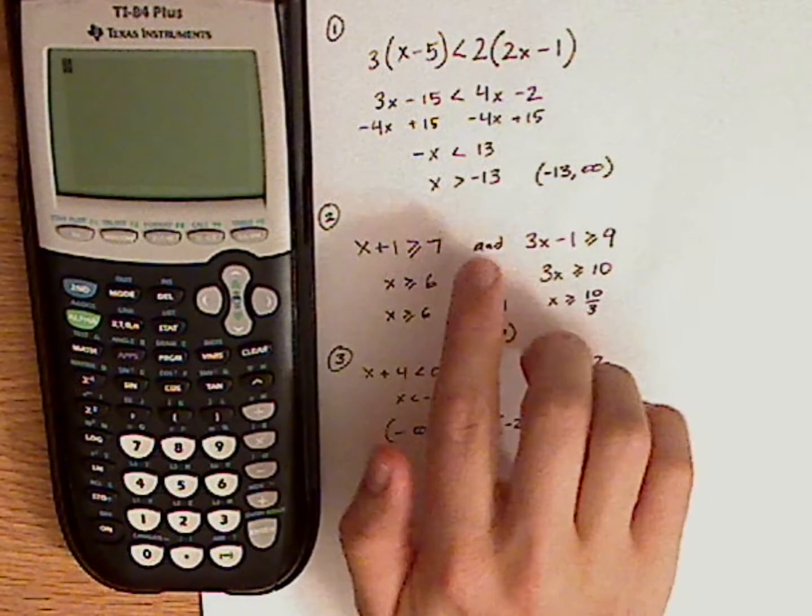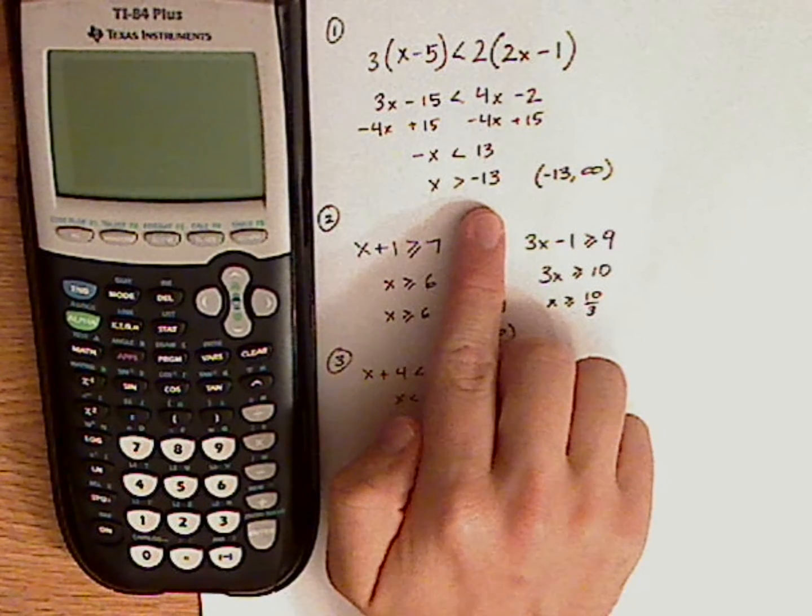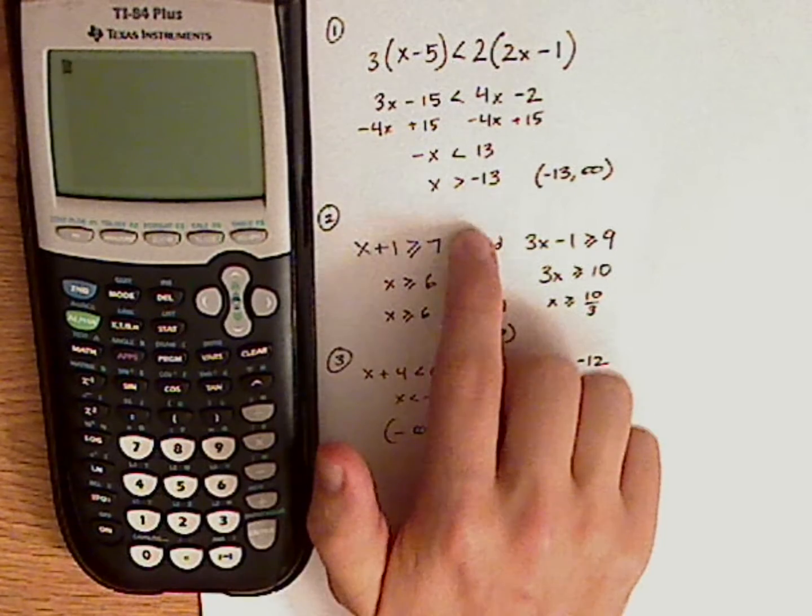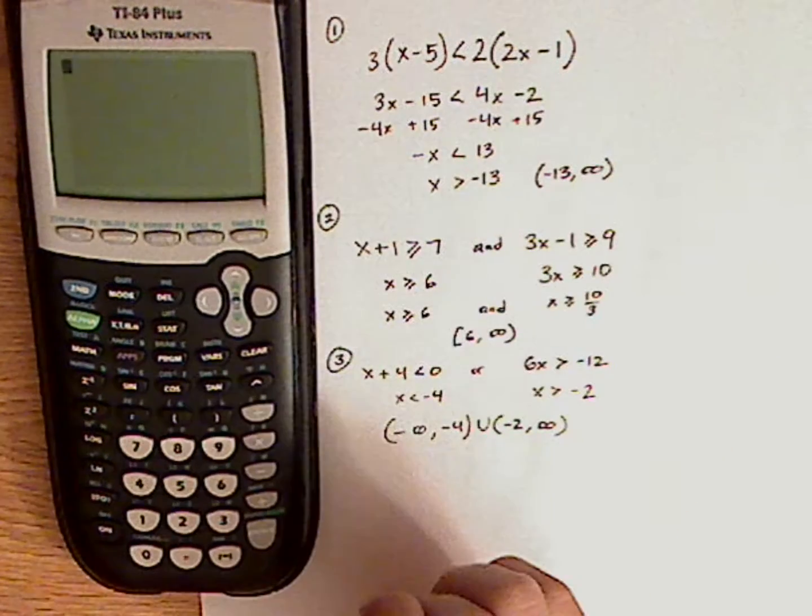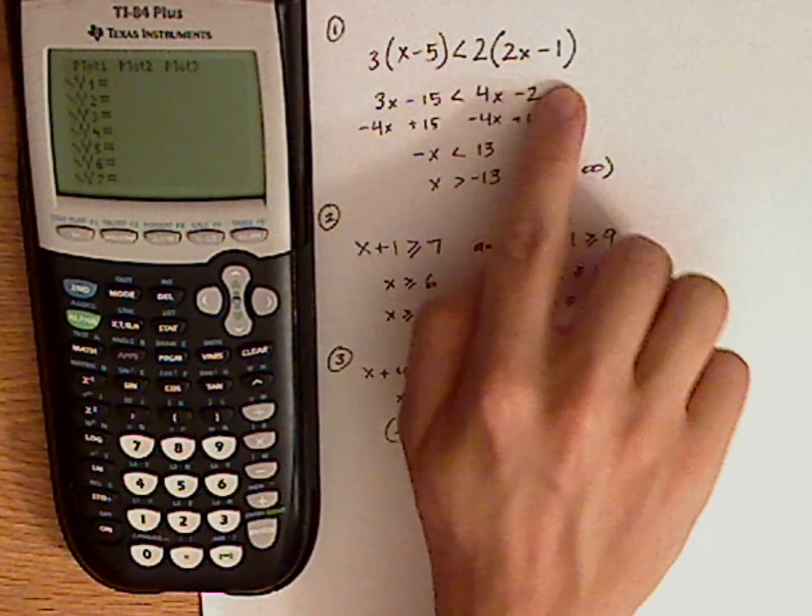So you do all the work for the first one, and you get x is greater than negative 13. So what you want to do to put in a linear inequality, go to y equals, and then just type it in.